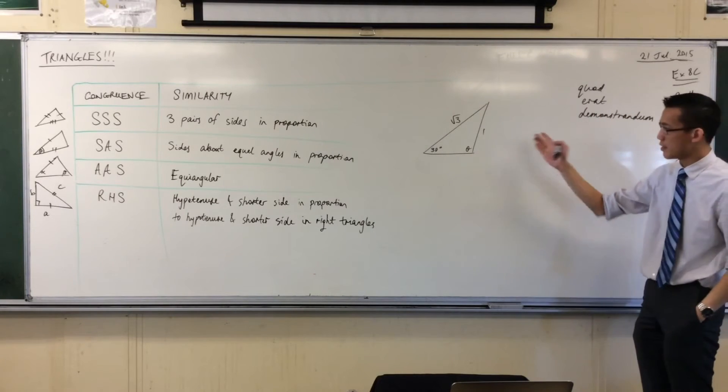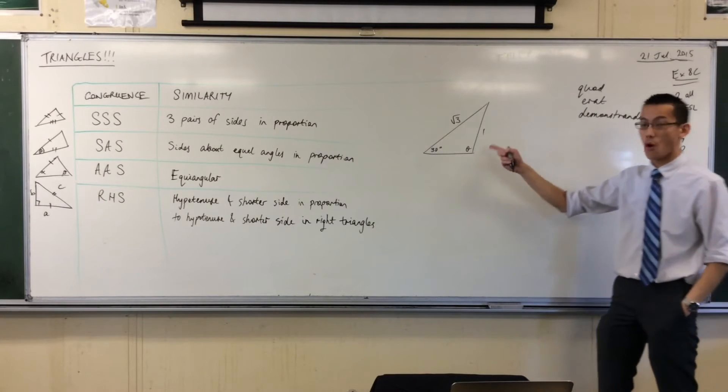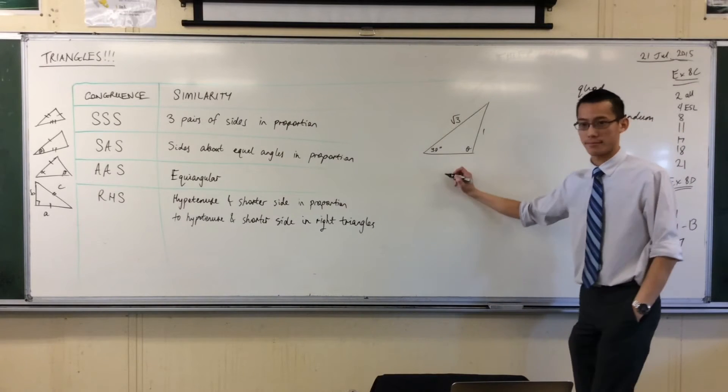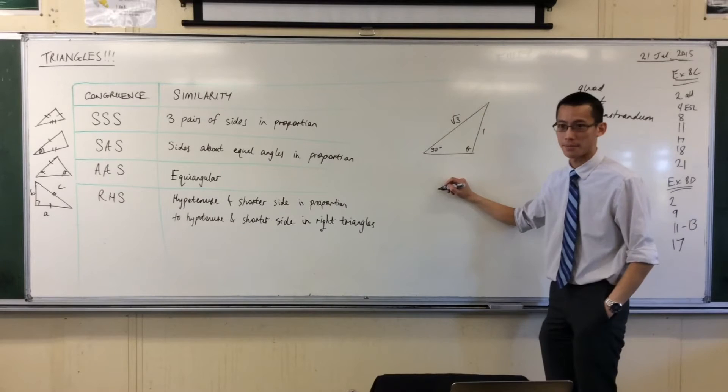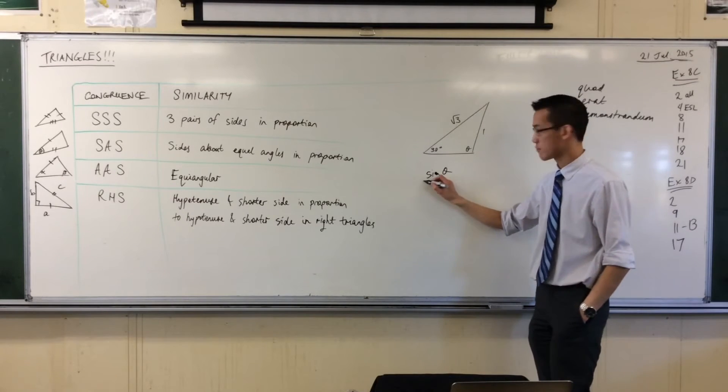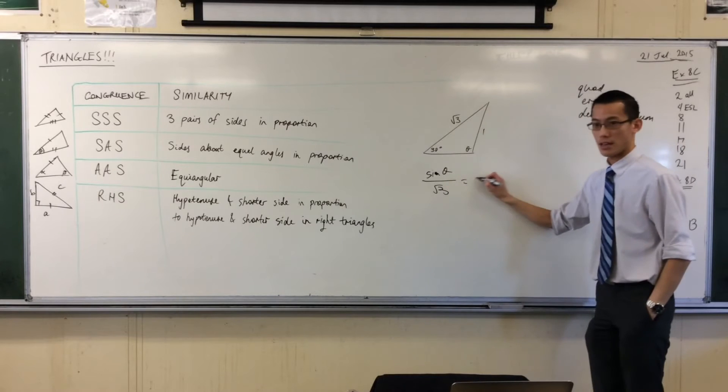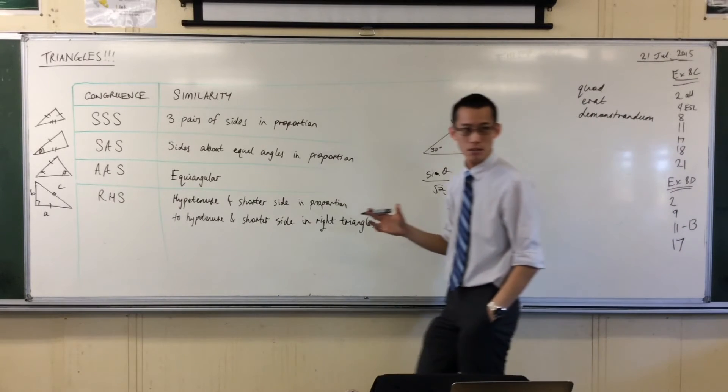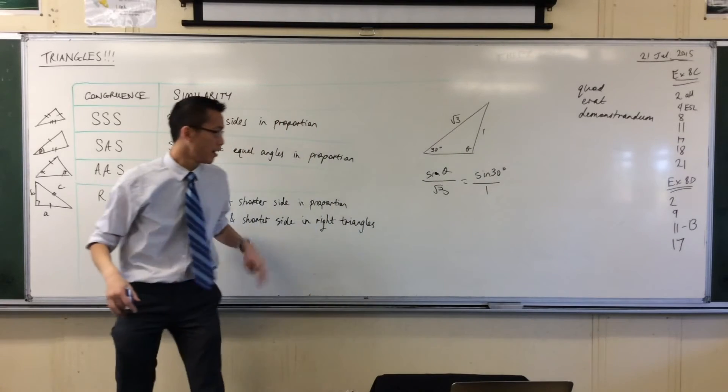The sine rule would be able to tell us what theta is, right? Help me work it out. What would I write? I'm trying to find theta. Sine theta on root 3 is equal to sine 30 degrees on 1. You happy with that? Just this on this, this on this, okay? Let's crunch it a little bit.